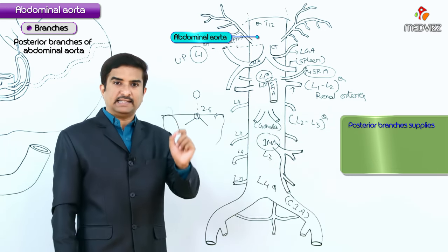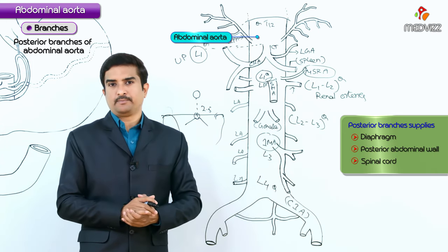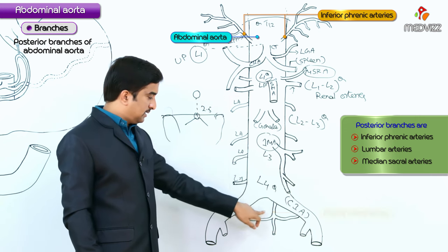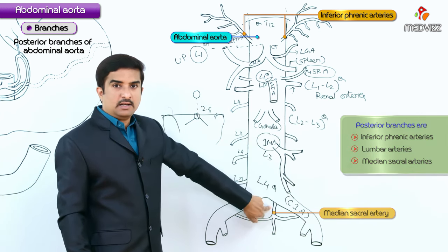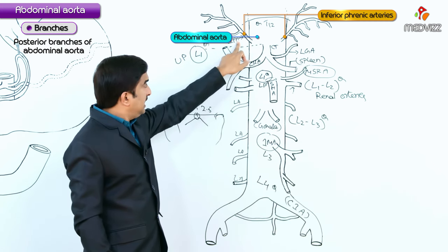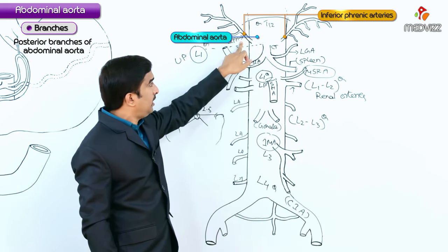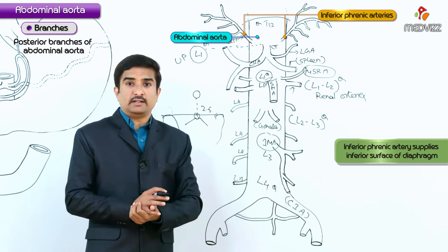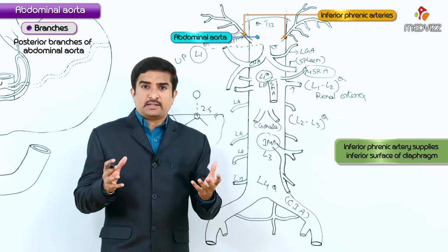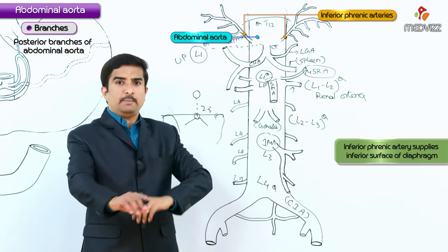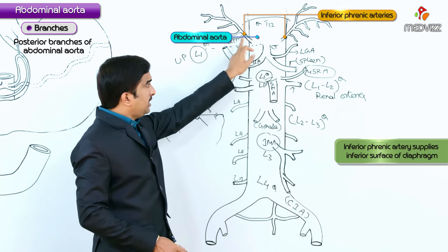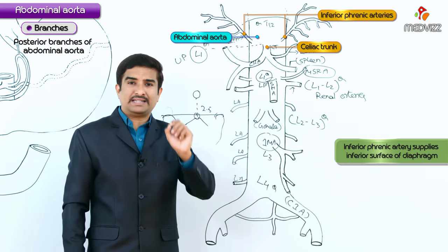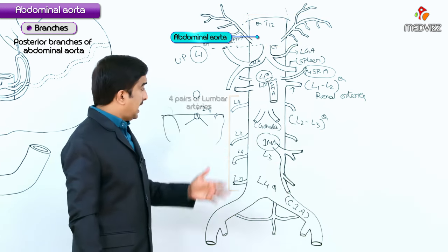The posterior branches of the abdominal aorta supply the diaphragm, the posterior abdominal wall, and the spinal cord. They consist of the inferior phrenic arteries, four pairs of lumbar arteries, and the median sacral artery. The inferior phrenic arteries arise immediately inferior to the aortic hiatus and mainly supply the inferior surface of the diaphragm. They may arise from the celiac trunk or directly from the abdominal aorta.